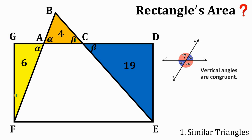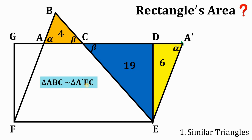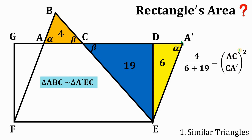Now let's focus on right triangle GAF, because what we're going to do is put this right triangle on the other side. Let's call this vertex A', originally vertex A. Using AAA similarity, triangle ABC is similar to triangle A'EC. Since they are similar, the ratio of their areas equals the ratio of their corresponding sides raised to the power of 2. So we have 4 over (6 plus 19) equals (AC over CA') squared. Simplifying, we have 4 over 25.